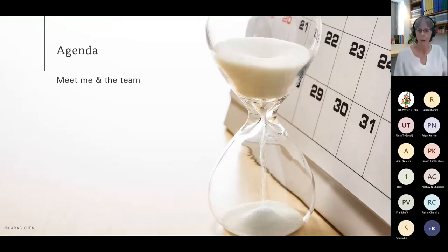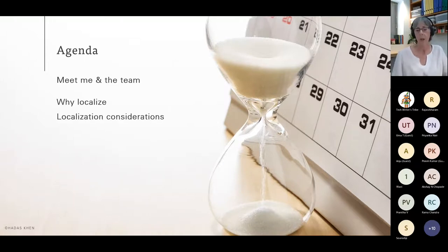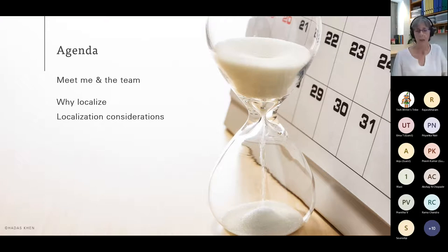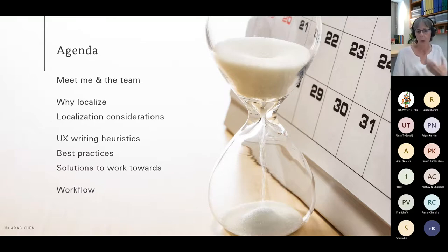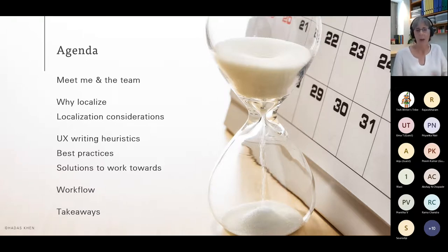Here's a run-through of what we're going to look at. I'll start by speaking a little bit about myself and then about the teammates we need to collaborate with on a daily basis. Then we'll discuss localization in some depth because it's really interesting and clarifies why, as writers, we need to think about translation and localization — this applies to all texts, not just UX. Then we'll get into some practical information: writing heuristics, language best practices, and solutions we should aim for, all in terms of writing that will be translated. Then we'll run through the product design localization workflow and finish up with a few takeaways.